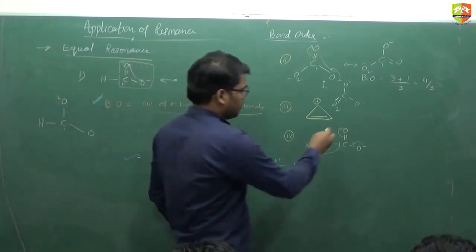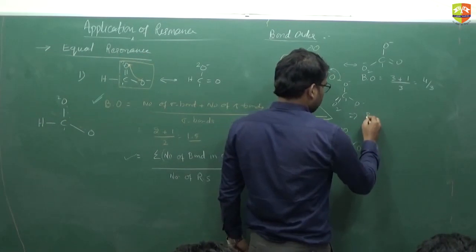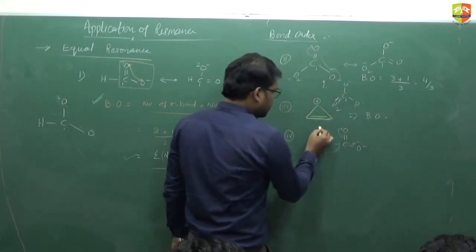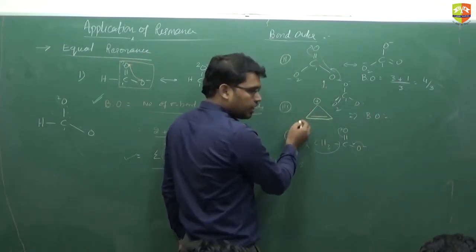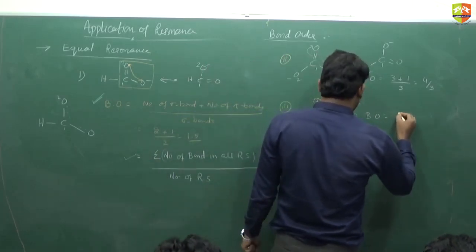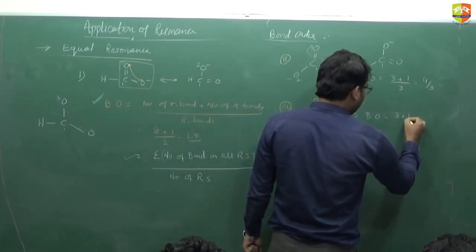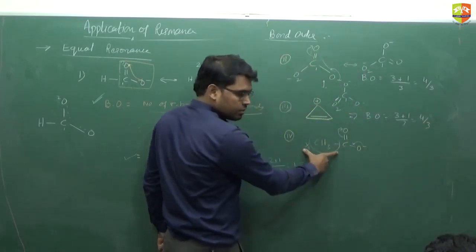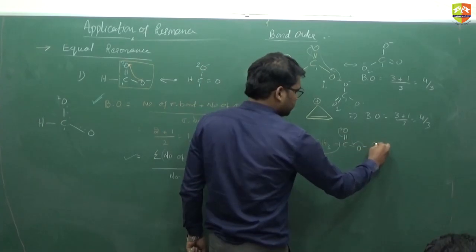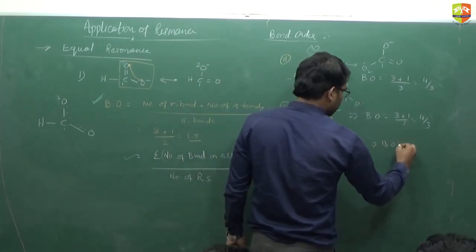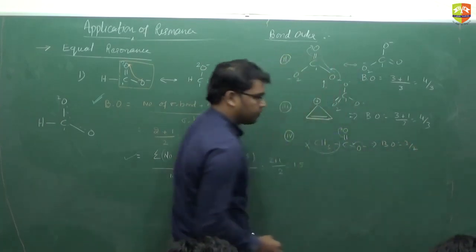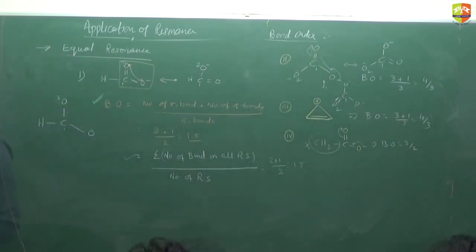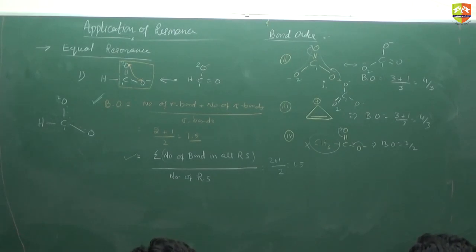For a molecule where the entire structure is in resonance, we have 3 sigma bonds and 1 pi bond, giving 4/3. For a part not in resonance, we get 3 by 2. In cases of equal contributing resonance structures, you simply find the average. Most problems will involve equal resonance structures, and the calculation is straightforward.